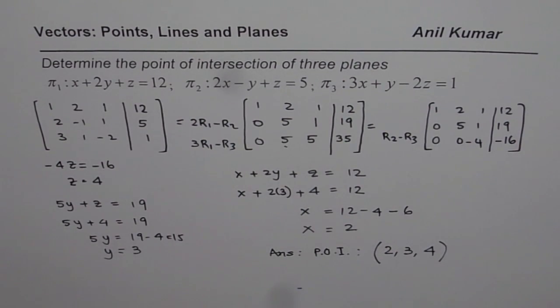So that is how we can actually find it. So it is interesting to note that three planes can intersect at a point, whereas two planes, can they intersect at a point? That's what you have to think about.